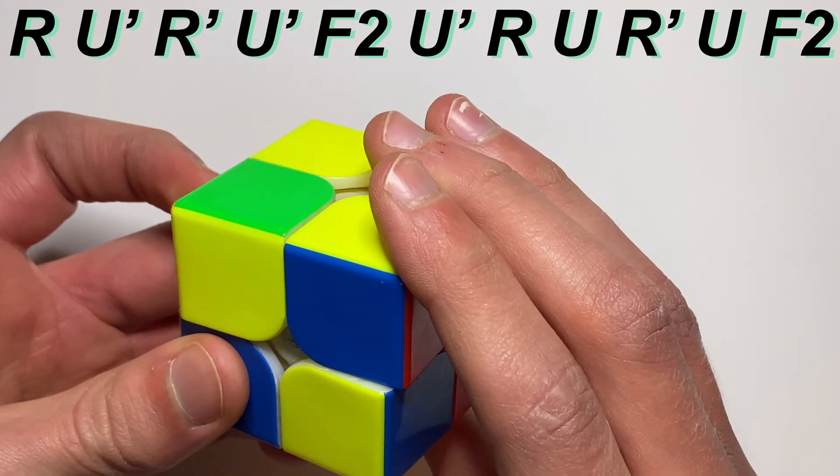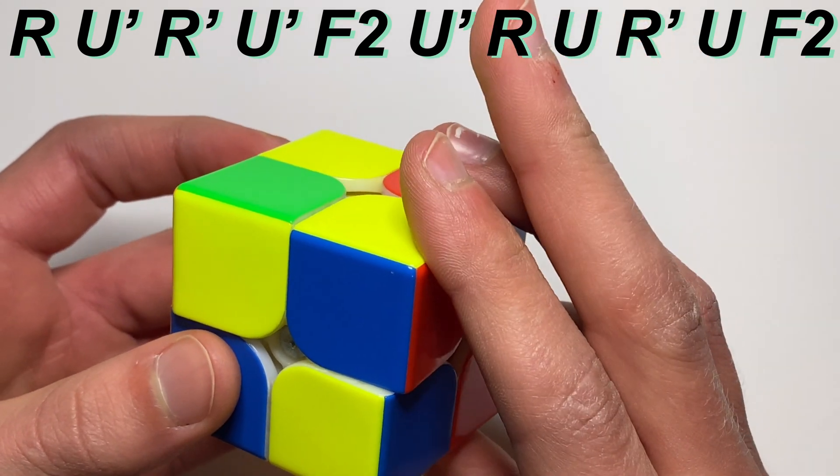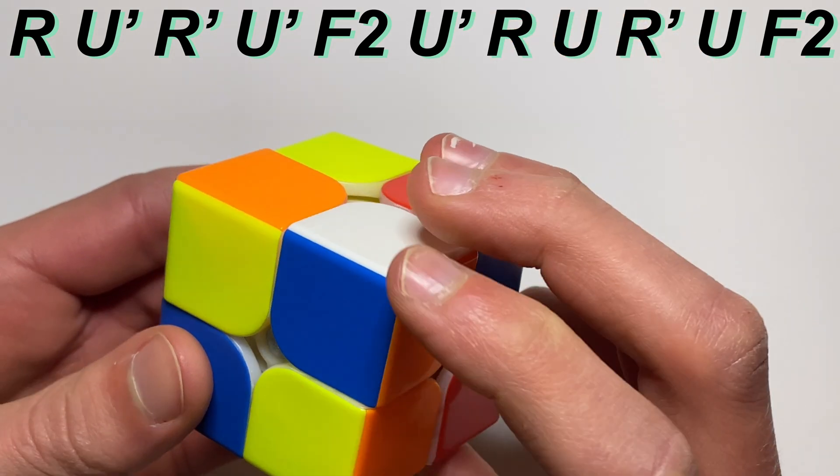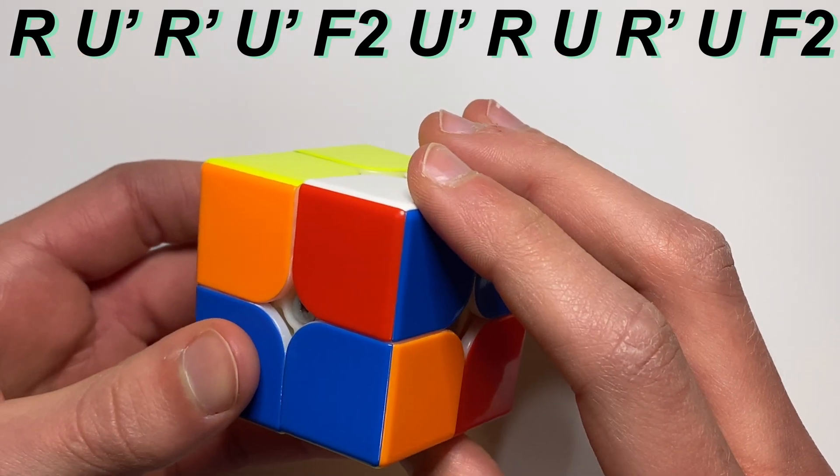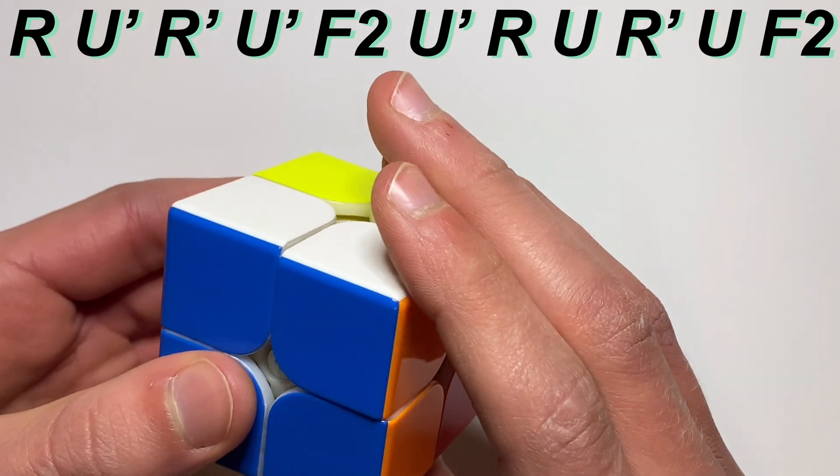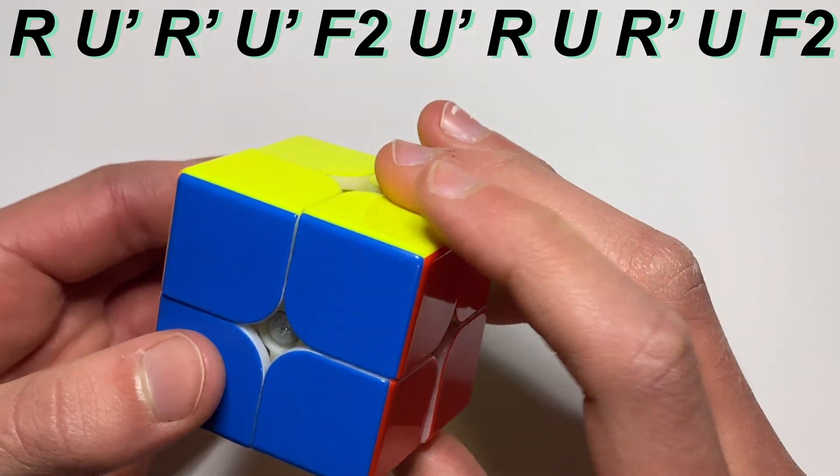Here's the finger tricks for it. It's R U prime R prime U prime, then since your hand is in this grip you do F2, then you do U prime R U R prime, then you do a push U, then you do an F2. So quicker it would go like this.